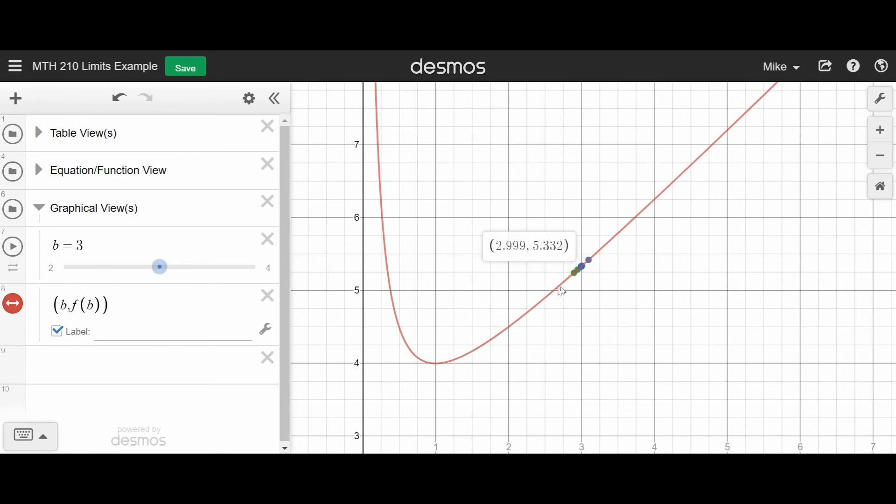But again, notice that as I go up and down this graph, I'm picking points that are closer and closer to 3. And way out here, my values are far away from 5.33. But as I get closer and closer to 3, you see the y values get closer and closer to the value 5.33. And it turns out actually that the value of this limit is 5.33 repeating or 16 thirds.